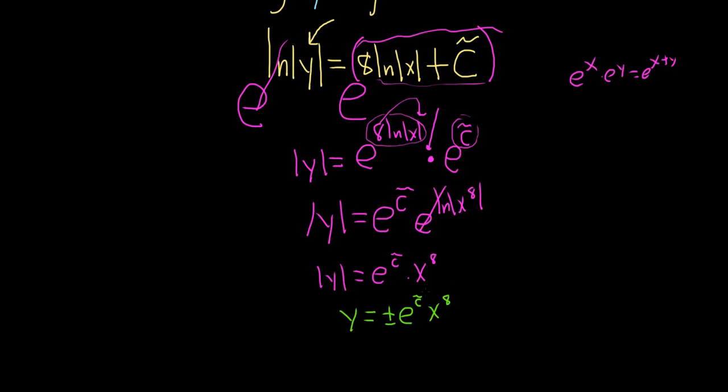And then what happens here is that this piece here, this is arbitrary. You don't know what c tilde is. You don't know what e to the c tilde is. And you put a plus or minus in front of it. You still don't know what it is. So just rename it and call it c. And that would be the answer.